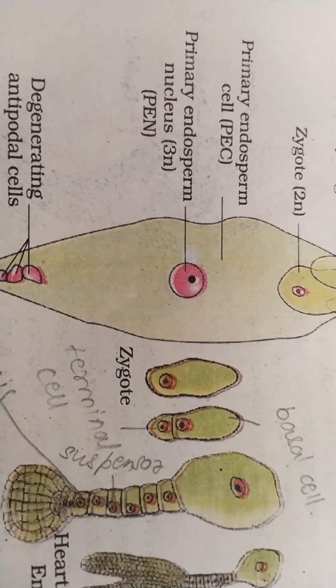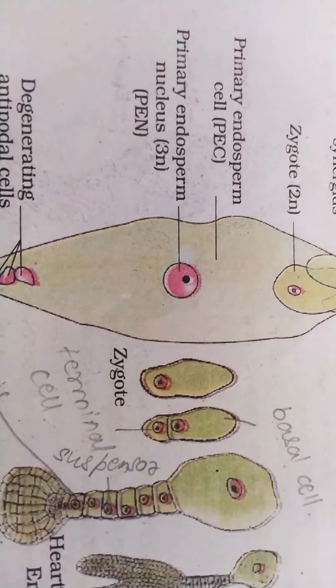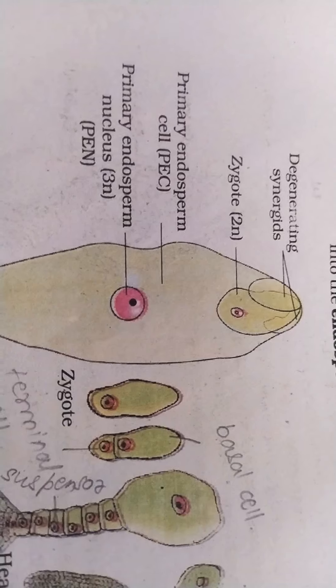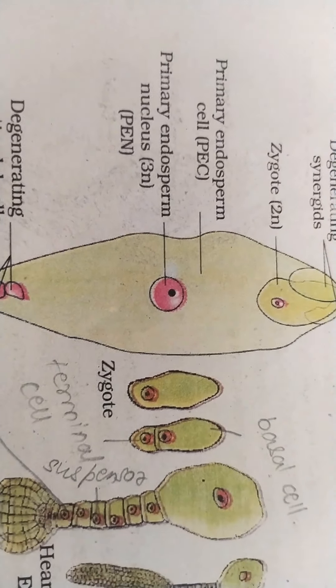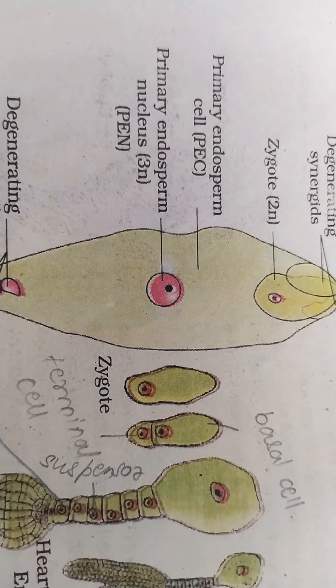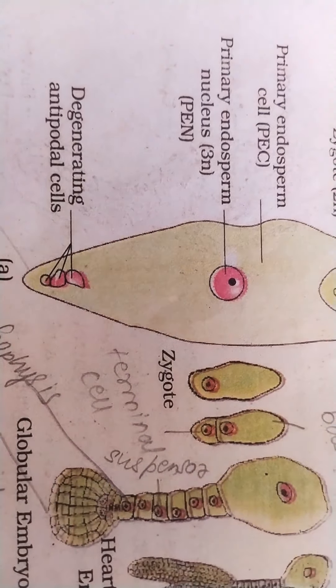After primary endosperm nucleus, zygote is formed from syngamy. PEN is formed from triple fusion and that is why it is double fertilization. Antipodals have now started degenerating because they are not required.